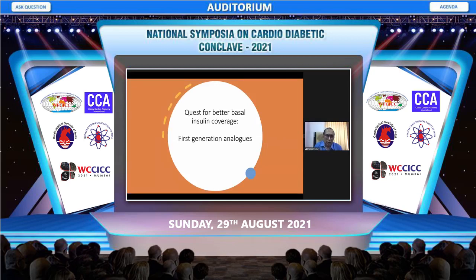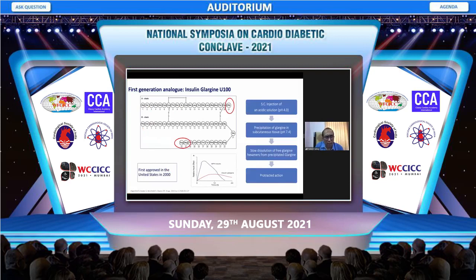This led to the development of first generation basal analogs. Glargine U100 is an acidic molecule, stabilized at acidic pH. Once injected, it precipitates in the subcutaneous tissue at the pH of the interstitial fluid, crystallizes, and is gradually absorbed over the 24-hour period. Structurally, there is an addition of two arginine molecules and a change at position A21, which alters the solubility characteristics of this insulin.